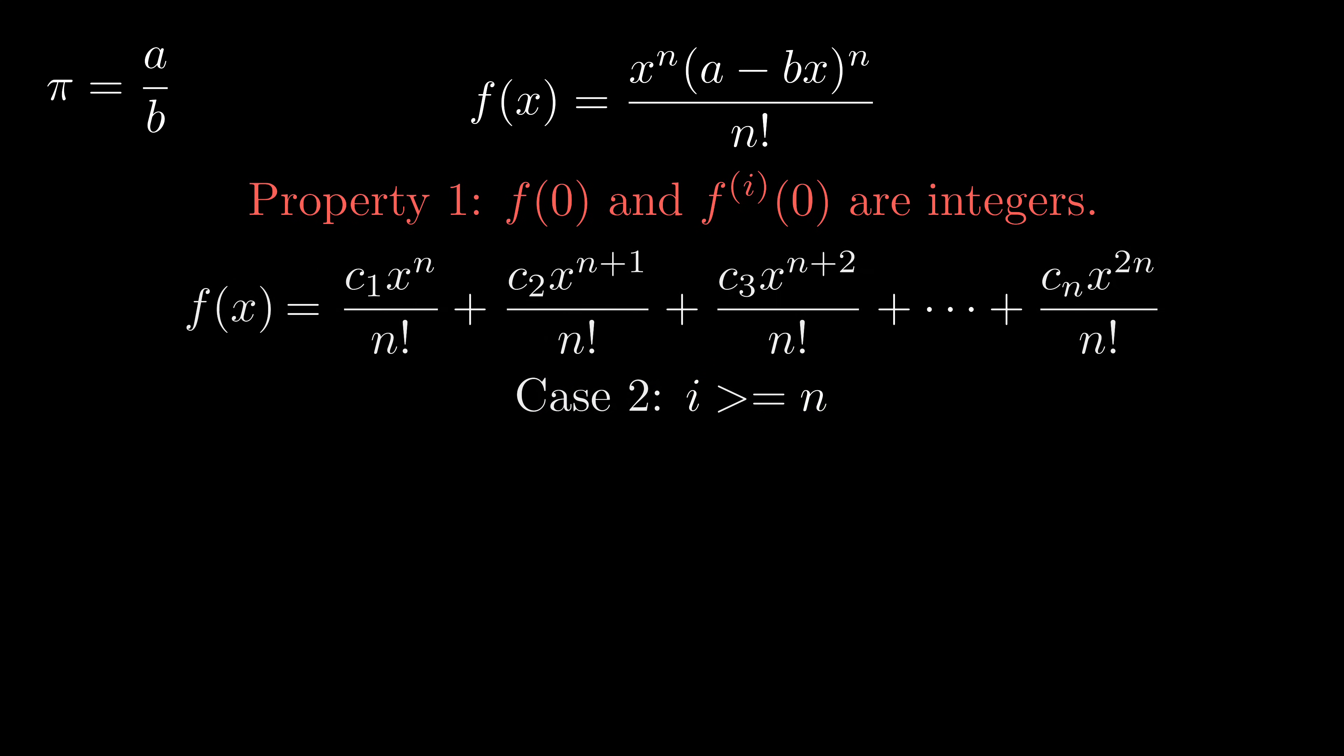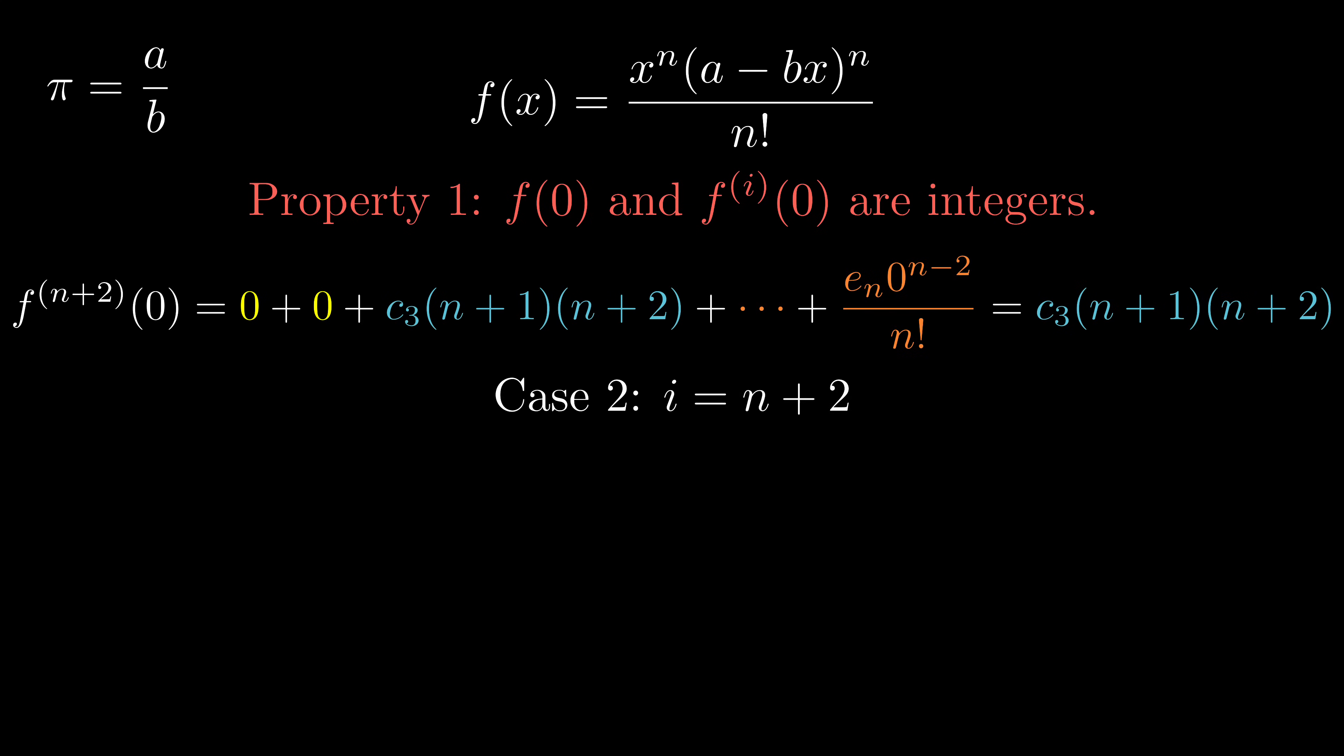For the second case that i is greater than or equal to n, we will have zeros and constants after taking the derivative. Without loss of generality, let's pick n plus 2 for the demonstration. The first two terms will become 0 because they run out of power. The third term will become a constant, and the remaining terms will still have positive orders. Because c3 is an integer and n factorial get cancelled, therefore the result is still an integer for i greater than or equal to n case.